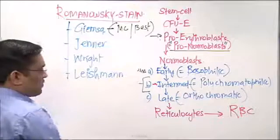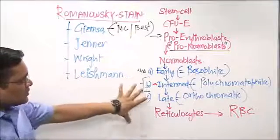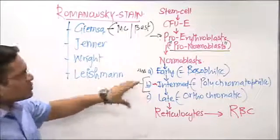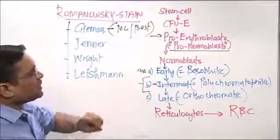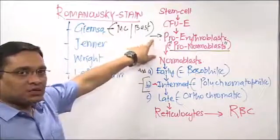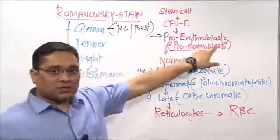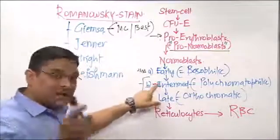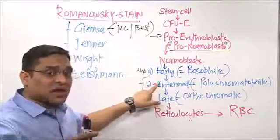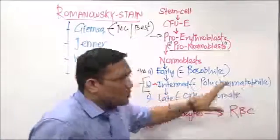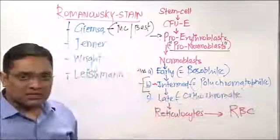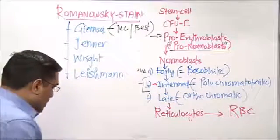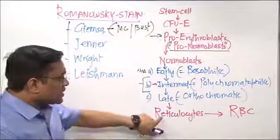To summarize RBC evolution questions: hemoglobin first appears in pro erythroblast or pro normoblast. Hemoglobin first detected by routine staining — the answer is polychromatophilic normoblast.